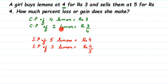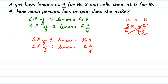Now we compare which value is greater — the cost price 3/4 or the selling price 4/5. We use cross multiplication: multiply 5 × 3 = 15, and 4 × 4 = 16. Since 16 is greater than 15, four-fifths is greater than three-fourths. So SP is greater than CP, which means the girl makes a gain.